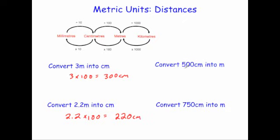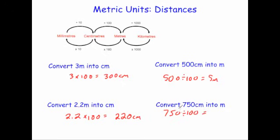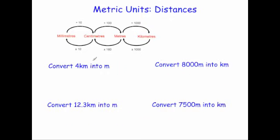Next, convert 500 centimetres into metres. To go from centimetres to metres you divide by 100, so 500 divided by 100 equals 5 metres. Finally, convert 750 centimetres into metres: 750 divided by 100 — move the decimal place twice — gives 7.5 metres.